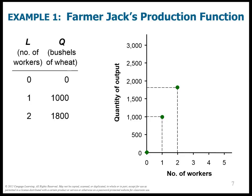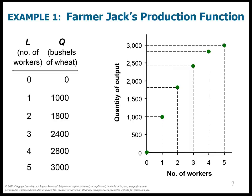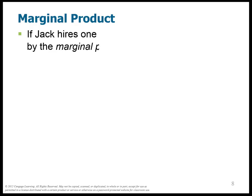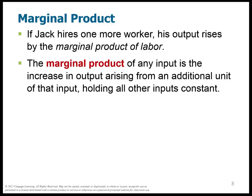We've plotted a function here — we're going to call this the production function, and I can connect these points with a line. The marginal product is a very interesting thing to think about. We always want to think on the margin, which means the next step. So the marginal product of labor is: if I hire one additional person, how much more product will I get?